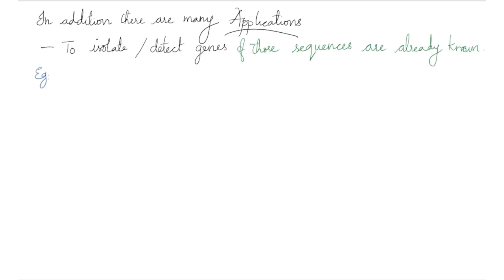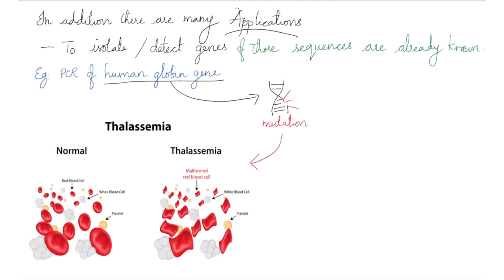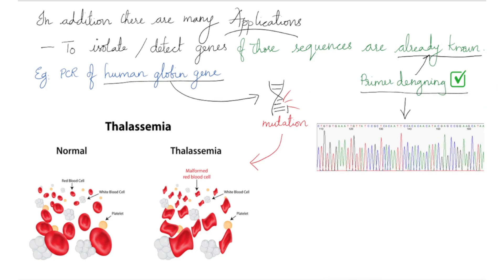In addition, there are many applications where it is necessary to isolate or detect genes whose sequences are already known. A PCR of human globin genes, for example, is used to test for the presence of mutations that might cause the blood disease called thalassemia. Design of appropriate primers for this PCR is easy because the sequence of the human globin genes are known.